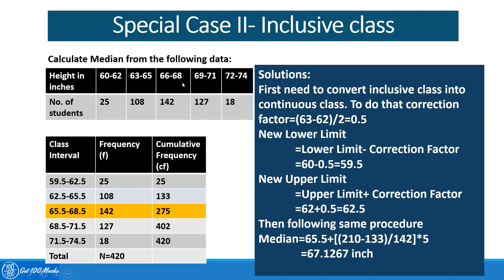The correction factor is the gap between the upper limit of one class and the lower limit of the following class, divided by 2. Now we have to correct the lower limit and upper limit to make the class intervals continuous. All the lower limits should be subtracted by the correction factor, and all the upper limits should be added by the correction factor.